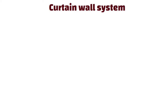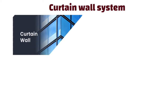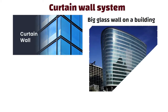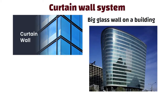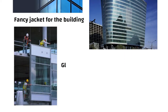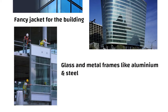Curtain wall system. A curtain wall system is like a big glass wall on a building. It is not the wall that holds up the building — it is like a fancy jacket for the building. It is made of lots of glass and metal frames like aluminium and steel. Let us understand its features.